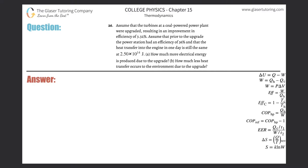Number 26. Assume that the turbines at a coal-powered power plant were upgraded, resulting in an improvement in efficiency of 3.32%. Assume that prior to the upgrade, the power station had an efficiency of 36% and that the heat transfer into the engine in one day is still the same at 2.5 times 10 to the 14 joules. How much more electrical energy is produced through the upgrade?